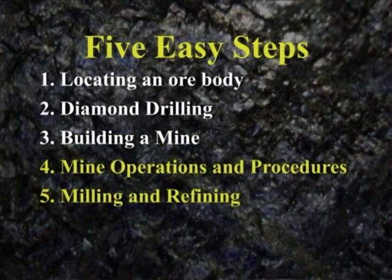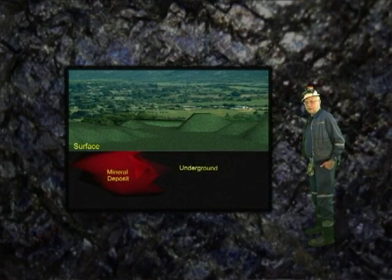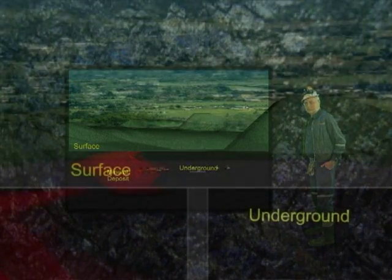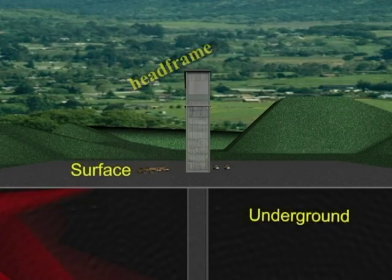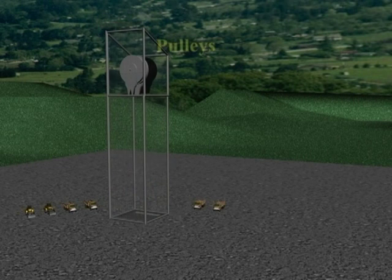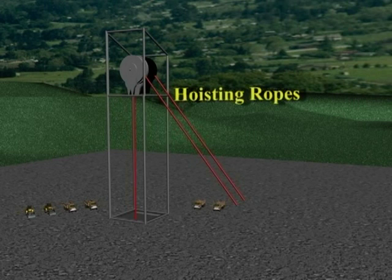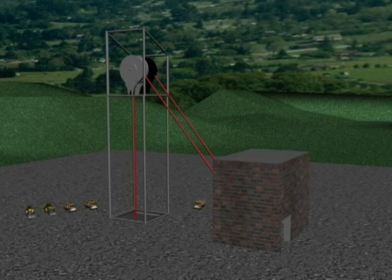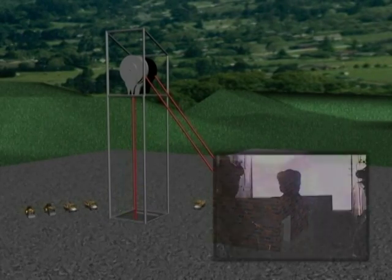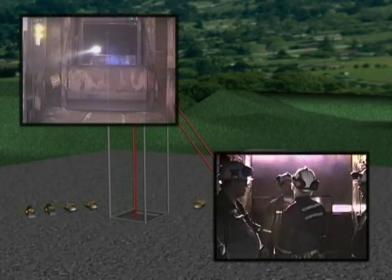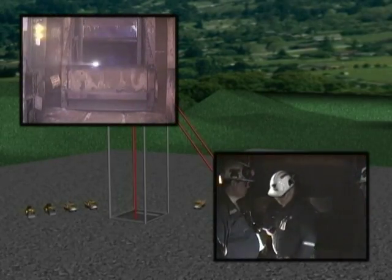Step 3: Building a Mine. When the size and shape of the ore body has been established, directly above the shaft a tall structure known as the head frame is constructed. These tall structures are equipped with wheels or pulleys at the top where hoisting cables, sometimes called hoisting ropes, pass over from a nearby room called the hoist room. The cables are attached to conveyances used to transport miners, equipment, broken ore, and rock in and out of the mine.